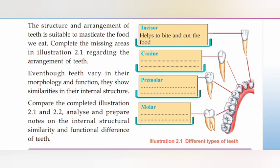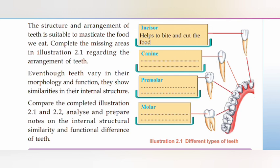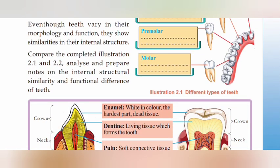Canines help to tear the food. Pre-molars help in chewing the food. Then molars help to grind the food. The next function as the incisors — it helps to keep the food.